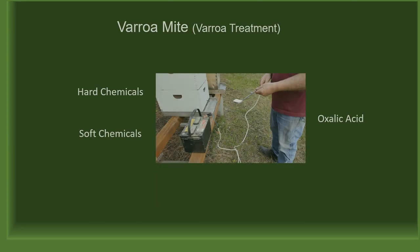August and September are critical times for beekeepers to test and treat their hives if necessary. The question is what to treat with. There are two types of treatment to choose from: hard chemicals or soft chemicals. Whatever you decide to use, it is important that every beekeeper understands what they are treating their bees with and the pros and cons of each.